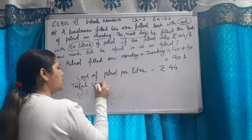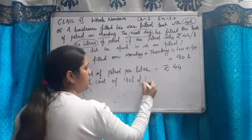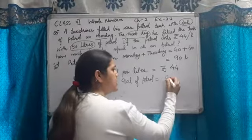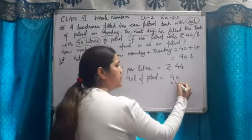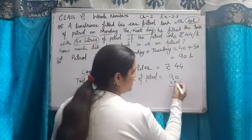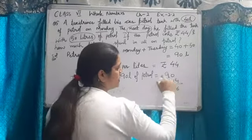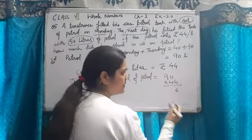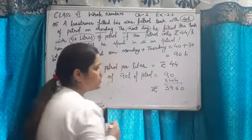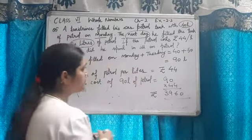Total cost of 90 litre of petrol which is equal to 90 multiplied by 44. 4, 4 nines are 36, 3 carry, 4 nines are 36 and 3, 39, 396, 0. So, cost of 90 litres of petrol is 3,960.